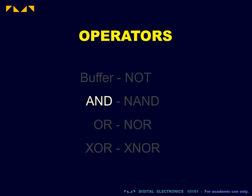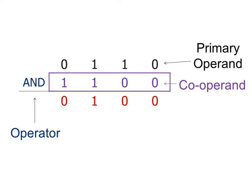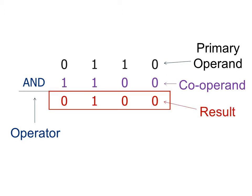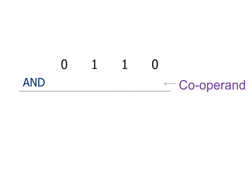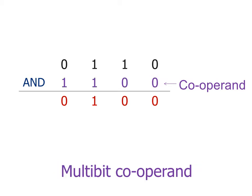We will now study the AND operator. Unlike the NOT operator, the AND operator requires a second operand — I will call this second operand the co-operand. Along with the logic operator itself, the co-operand will determine what processing will be performed on the primary operand to obtain the result. A single-bit co-operand consists of a single bit that acts on each bit of the primary operand. A multi-bit co-operand is of the same size as the primary operand, and the bitwise operation is performed on corresponding bits of the two operands.